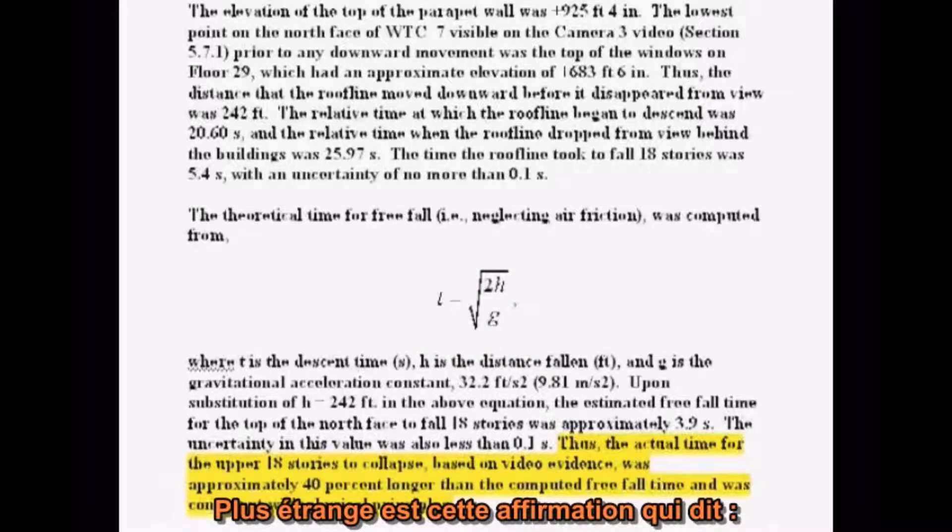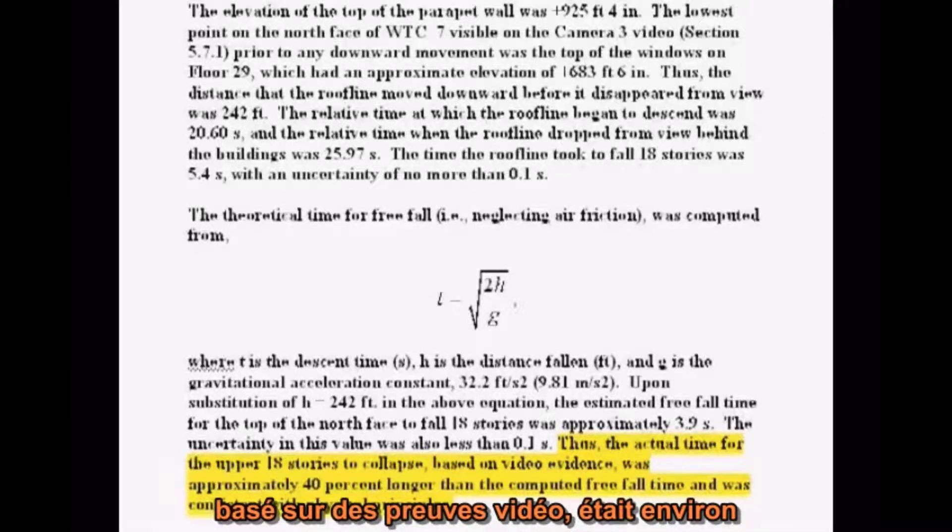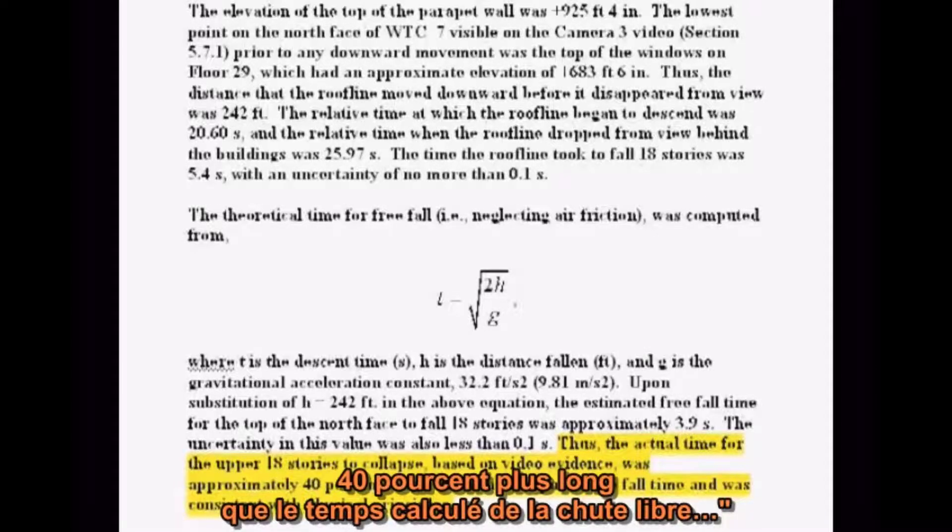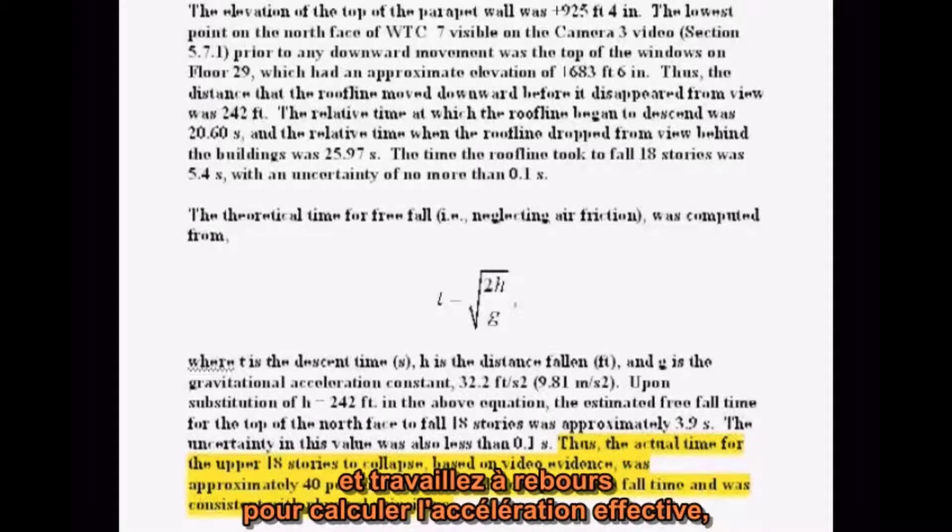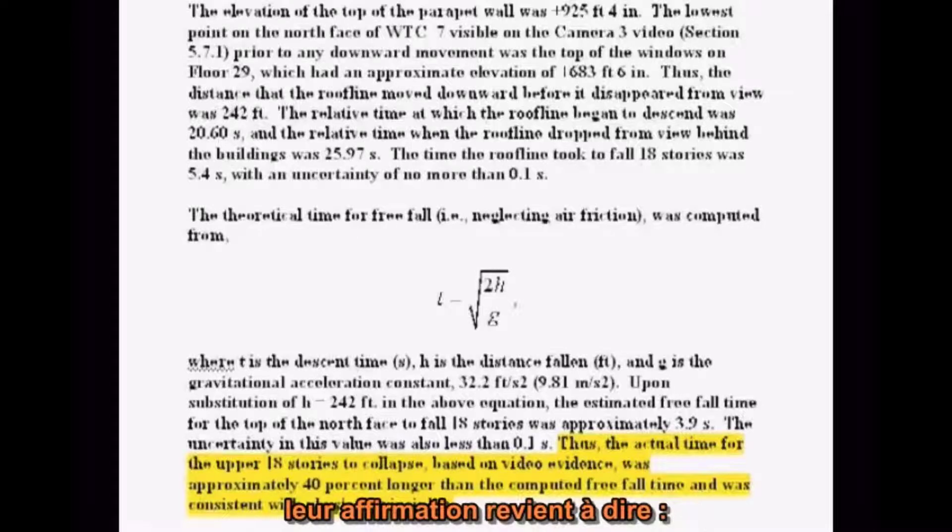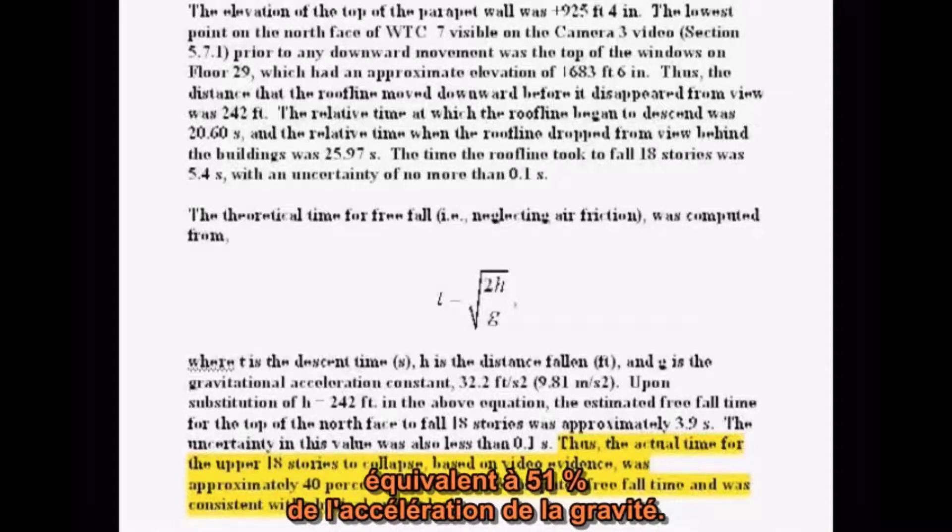More bizarre is the claim that, quote, the actual time for the upper 18 stories to collapse, based on video evidence, was approximately 40% longer than the computed freefall time. If you start with a 40% increase in the time of fall and work backwards to compute the effective acceleration, their claim is equivalent to saying the acceleration of the building is only 5 meters per second squared, which is 51% the acceleration of gravity.